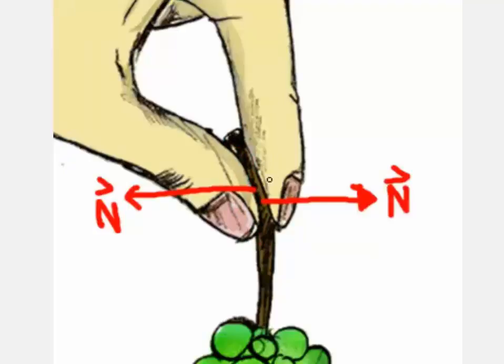Okay, so now let's draw the friction force. We have two surfaces in contact here. So in this case, friction is preventing the grapes from falling on the ground and making a big mess.